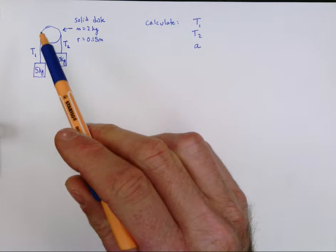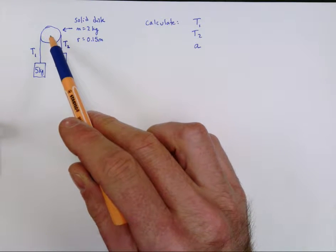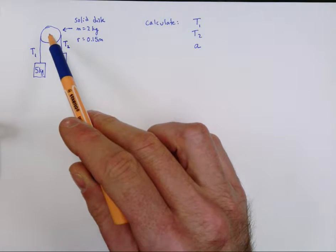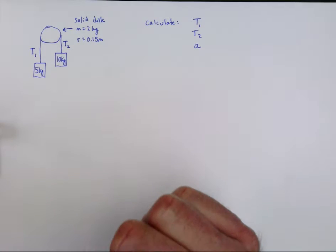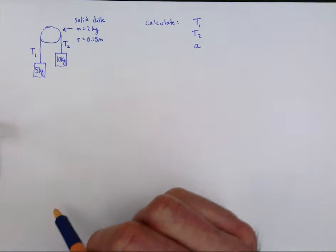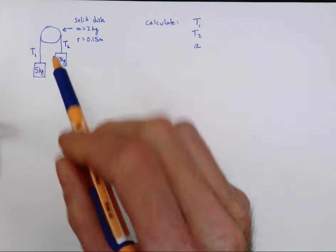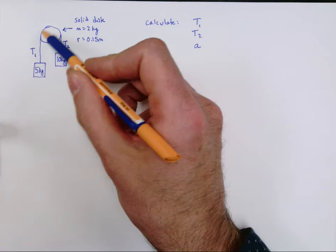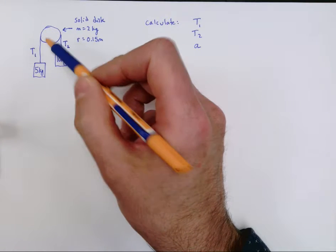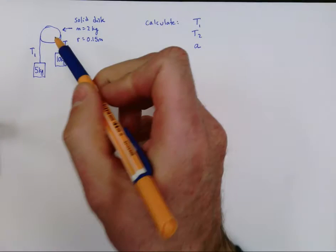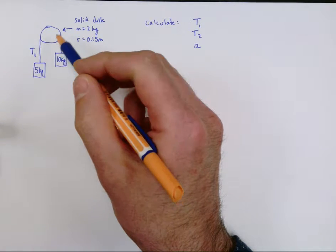In the past, in the more simple problems, if the pulley has no mass and there's no friction, then the tensions do have the same value as one another, which made the problem easier. But now, in order to make this massive pulley rotate and give it angular acceleration, these two values have to be different from one another.